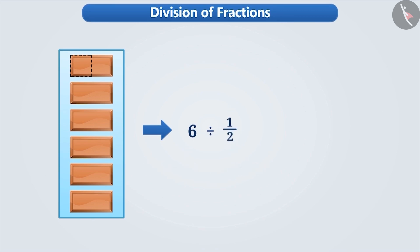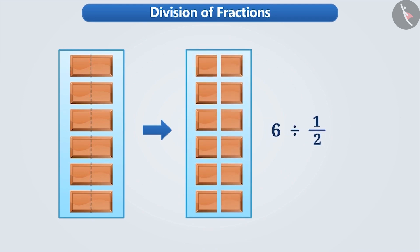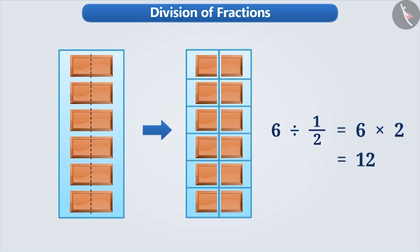Here we have to divide a whole number by a fraction. As you can see, to make a group of half chocolates, we have to divide each chocolate into two equal portions. Therefore, by making two equal portions of six chocolates, we get six into two, that is twelve parts. We can say that six divided by half is equal to six into two, which is equal to twelve.